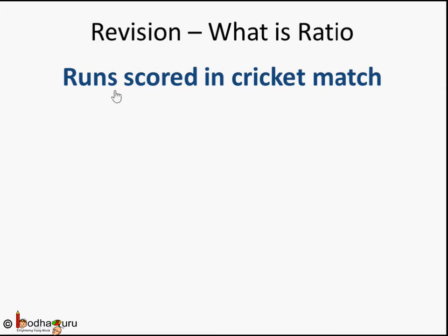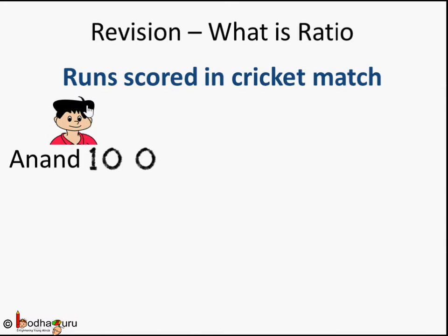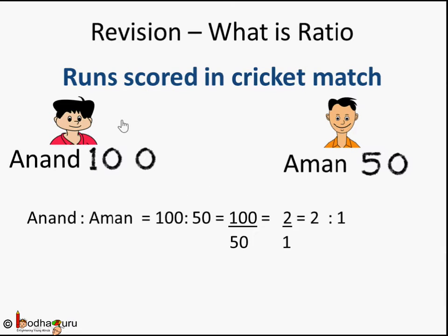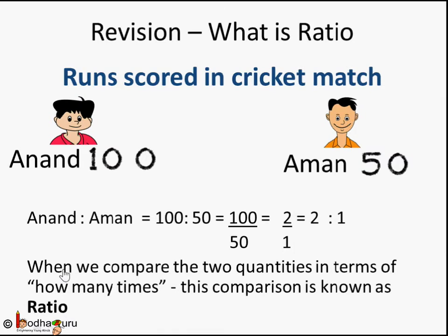What is ratio? Let's say there was a cricket match with our two star players, Anand and Aman. Anand scored 100 runs and Aman scored 50 runs. So the ratio of runs scored by Anand to Aman is 100 to 50, that is 100 by 50. When we simplify it, we get 2 by 1, so the ratio is 2 is to 1. We can say Anand scored 2 times the runs as Aman.